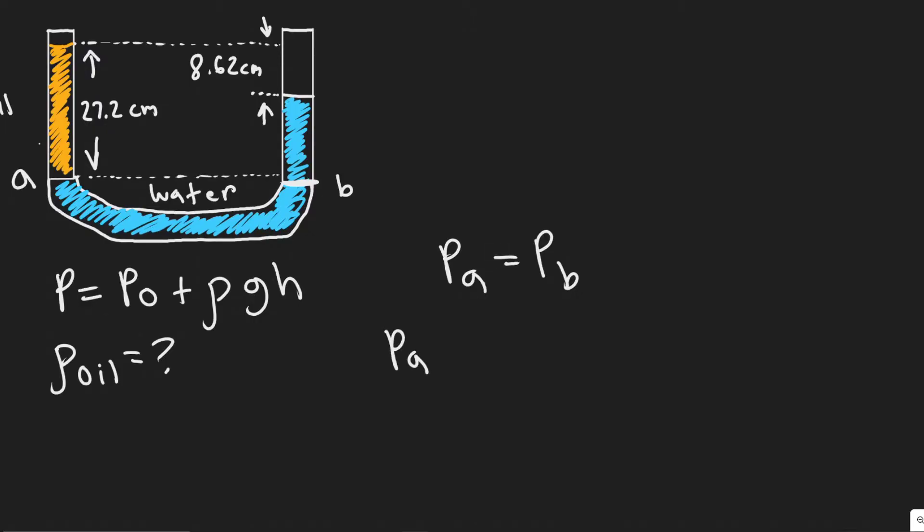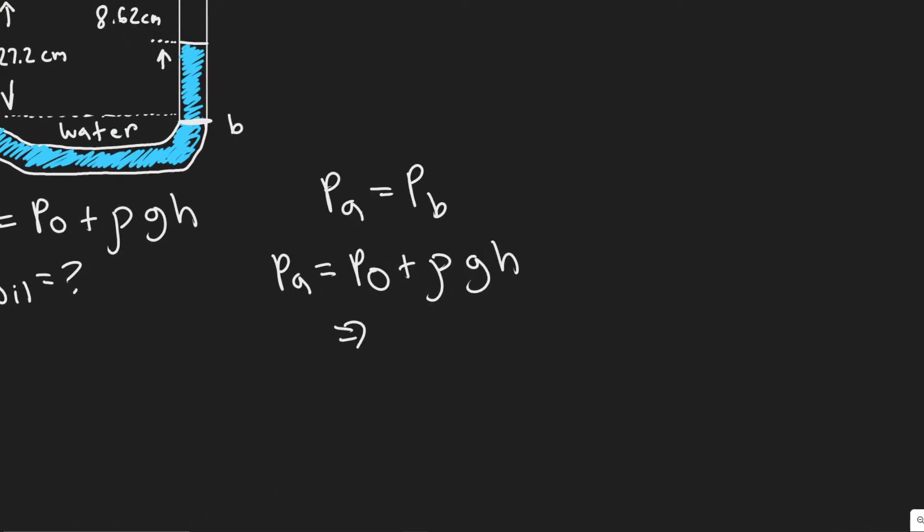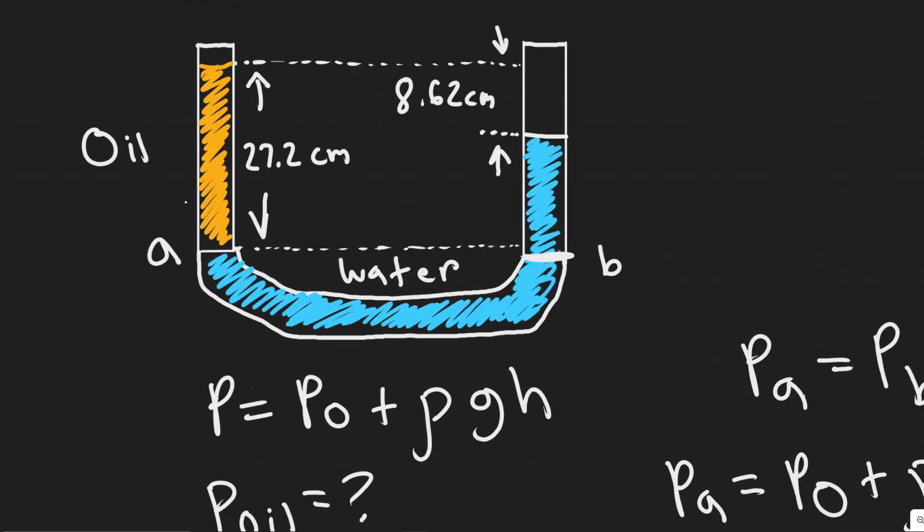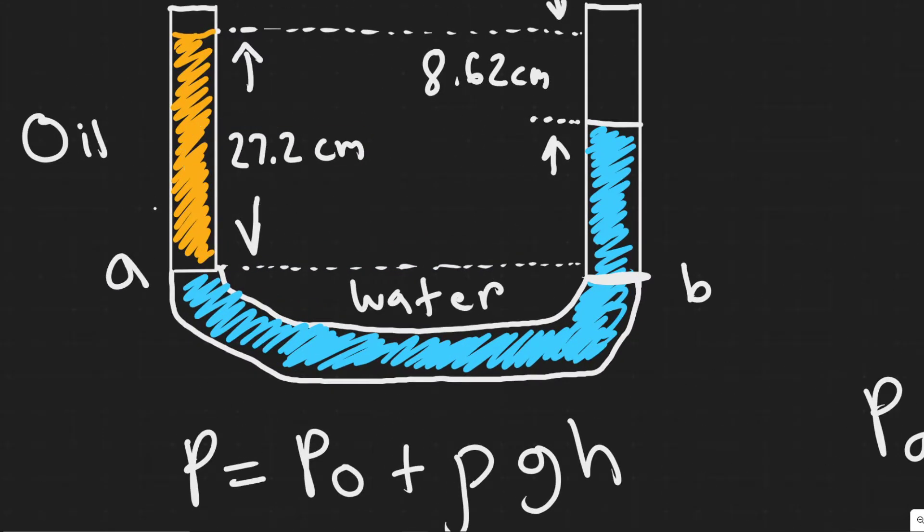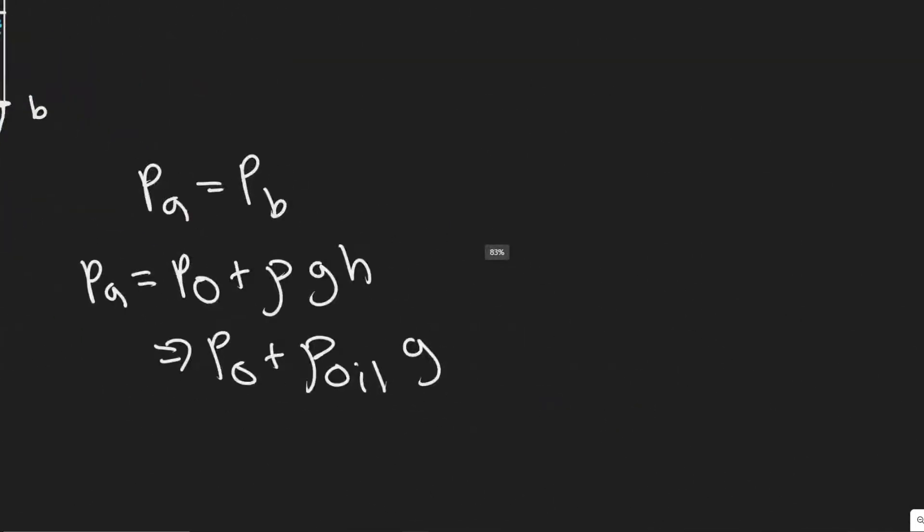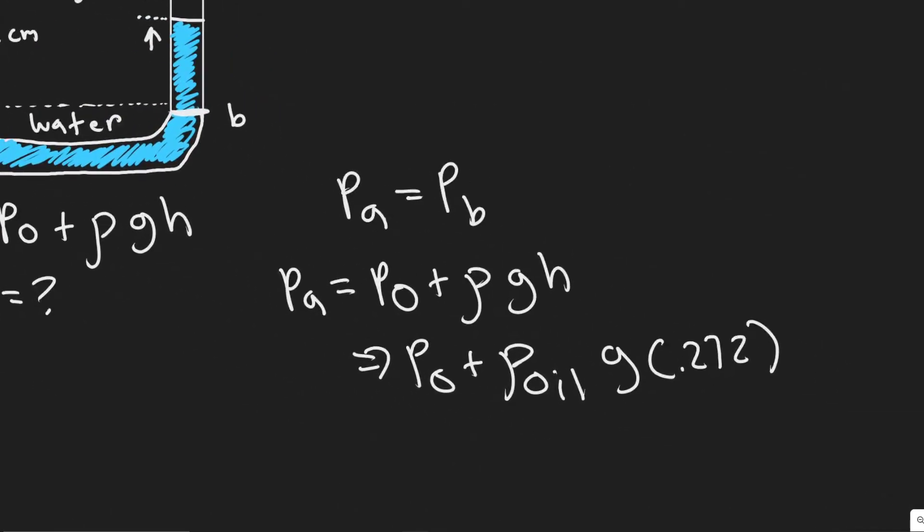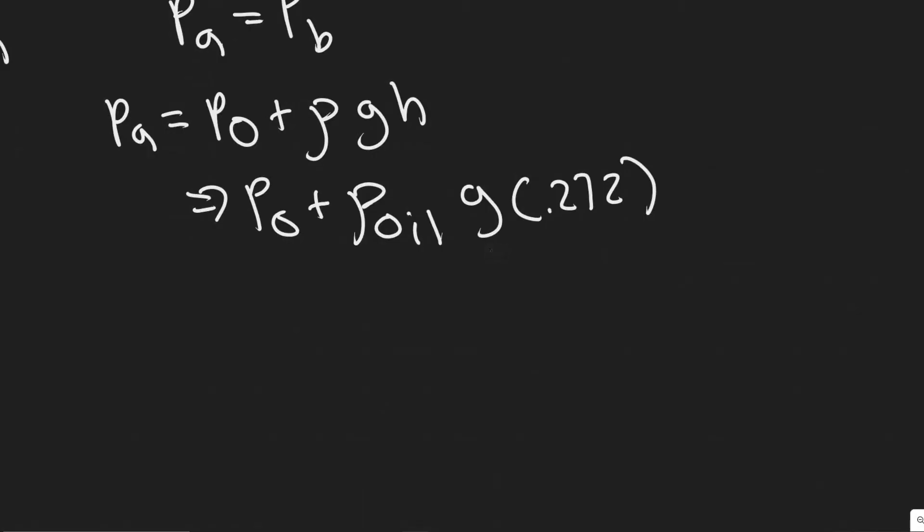So let's go ahead and start with a. So the pressure at a is here. And so we know it's going to be the initial pressure plus rho gh. So let's go ahead and write this. So the p zero plus rho, which is what we're trying to find of the oil times g, we'll actually just leave it like that because it's going to cancel. And then the height is the distance from the point to the free surface right here, which is 22 or 27.2 centimeters. So that value right there is 0.272 meters. You should just know you divide by 100 to convert that. And so that's Pa, the pressure at a.